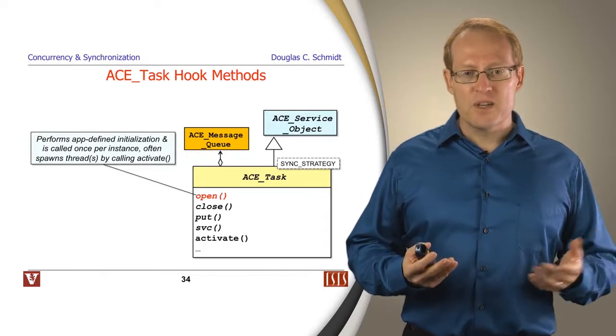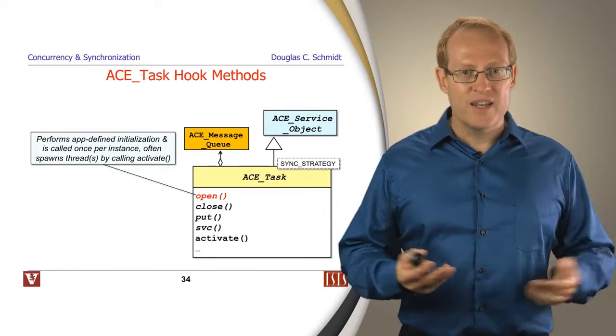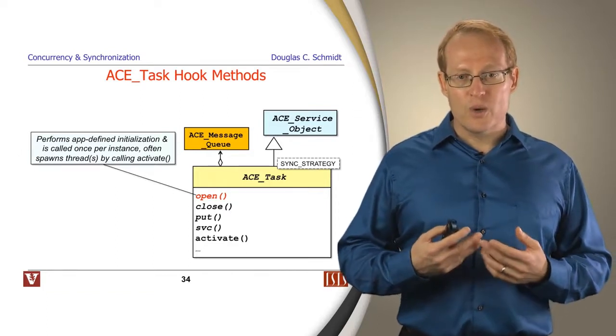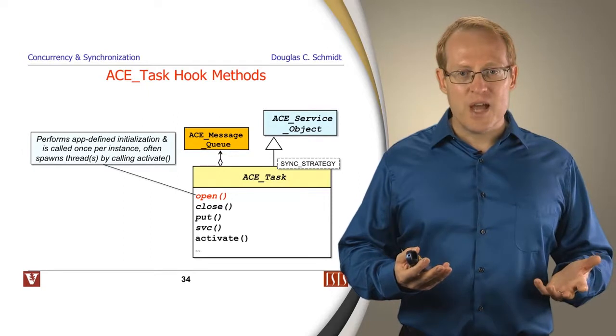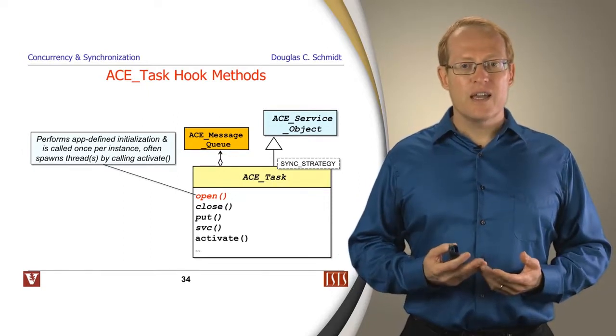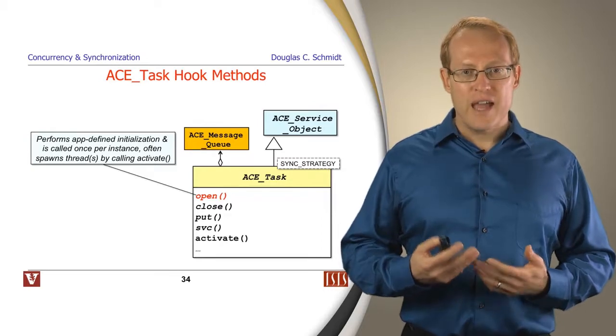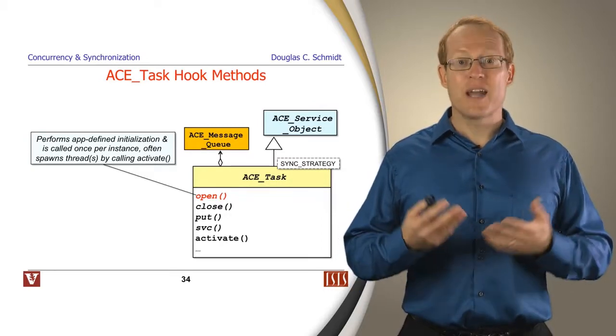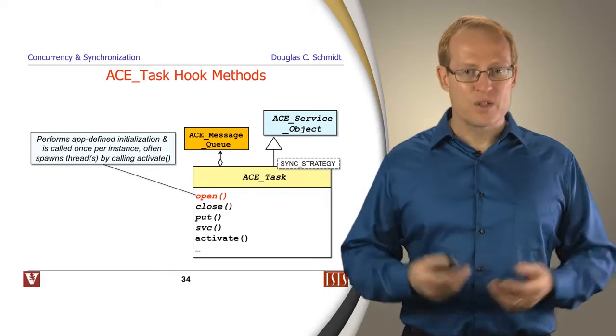The first method is very simple. It's the open method and it's essentially a form of a virtual constructor. It's called to initialize an ACE task when it starts to run. And the most common thing it does is it turns around and calls activate in order to convert the object into an active object.